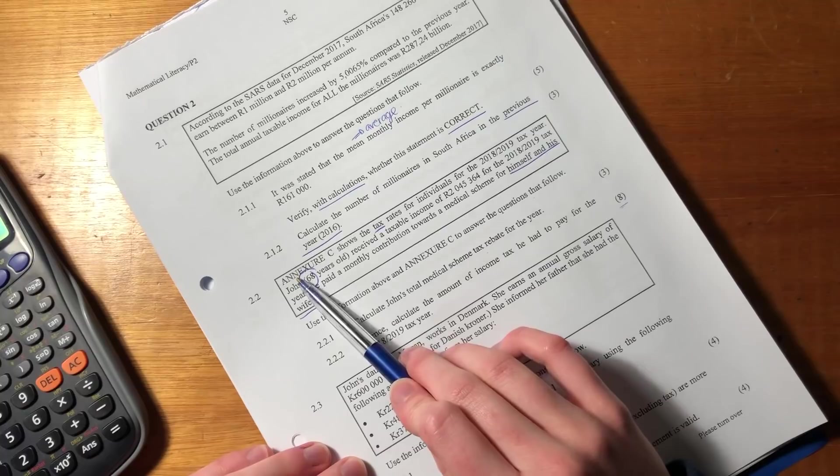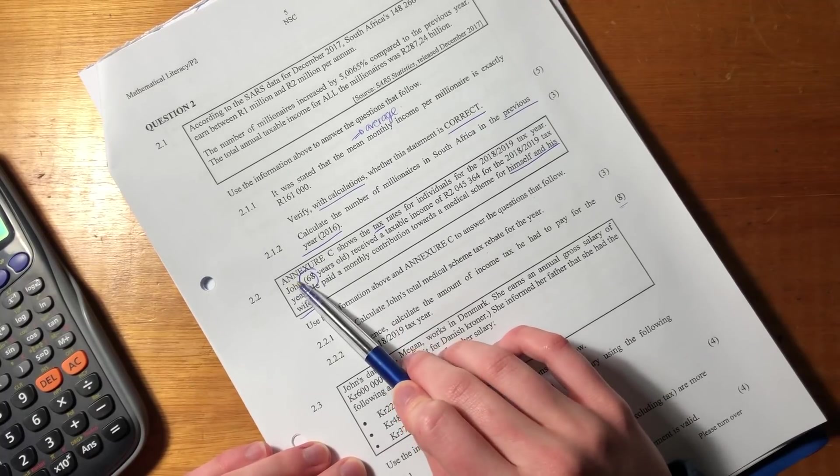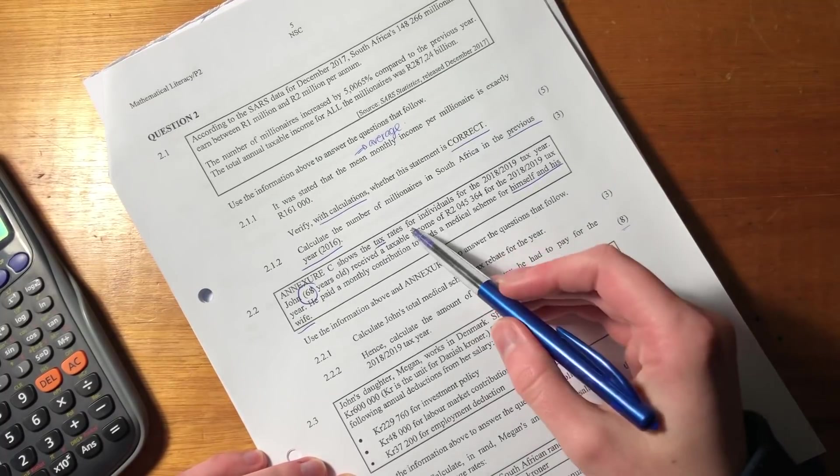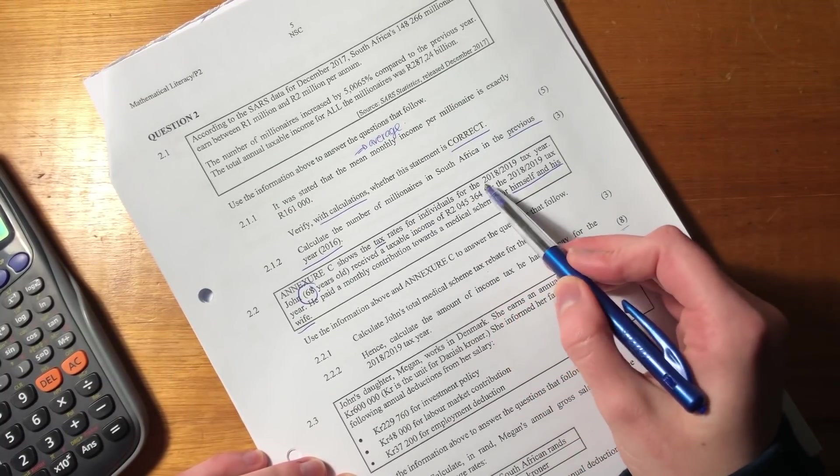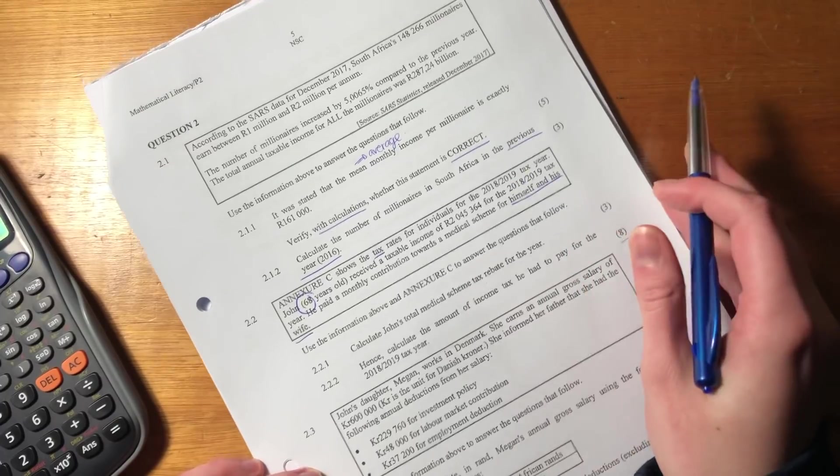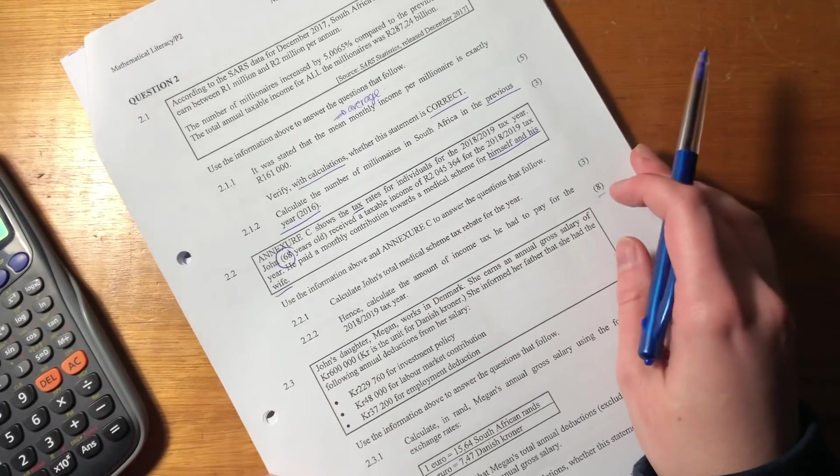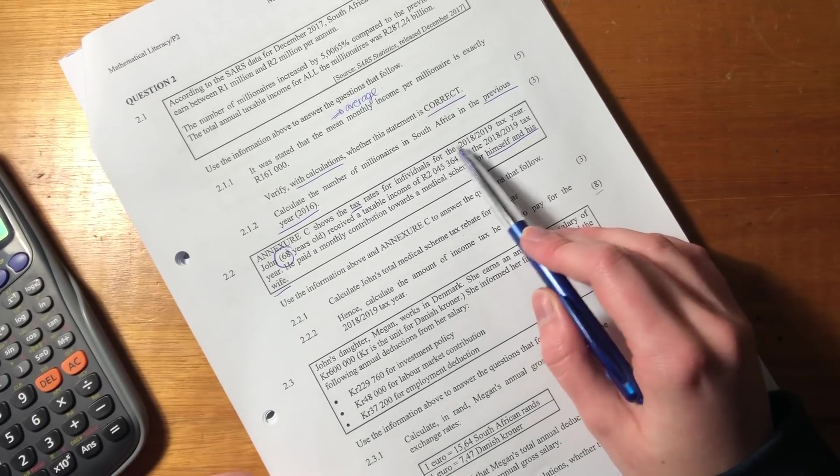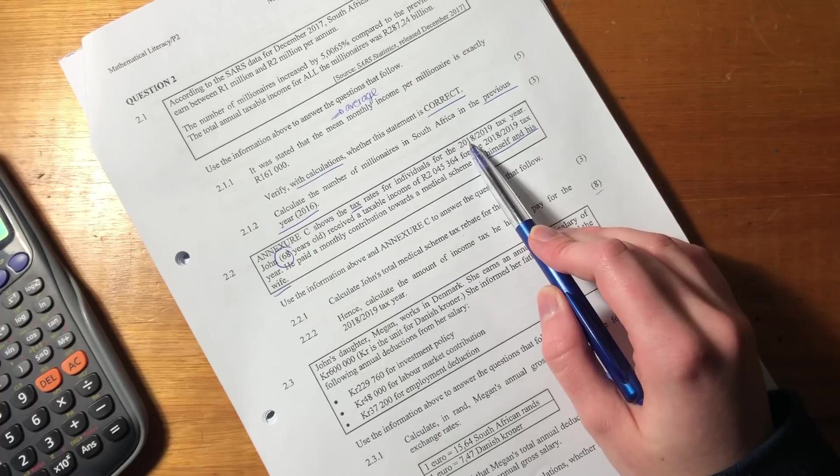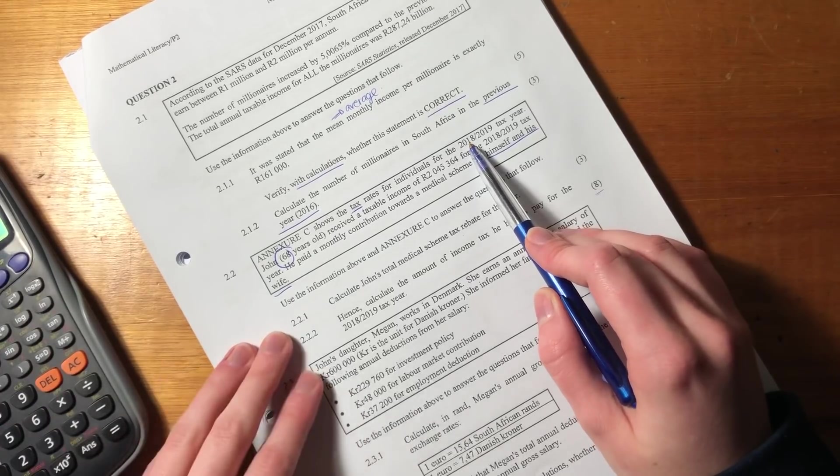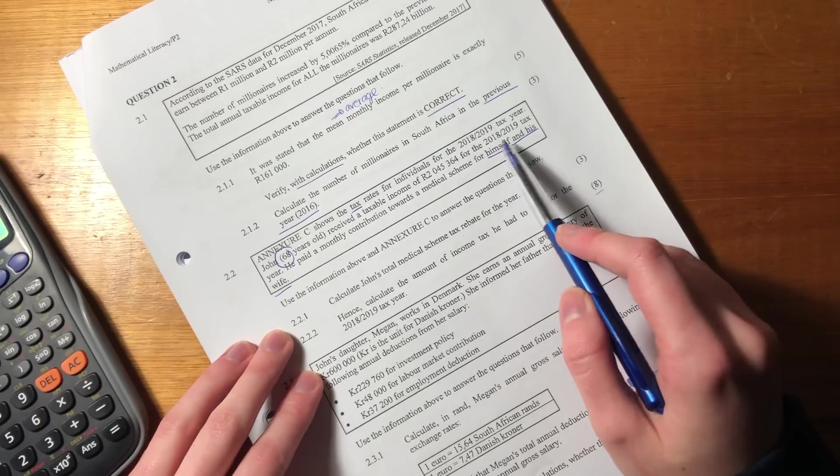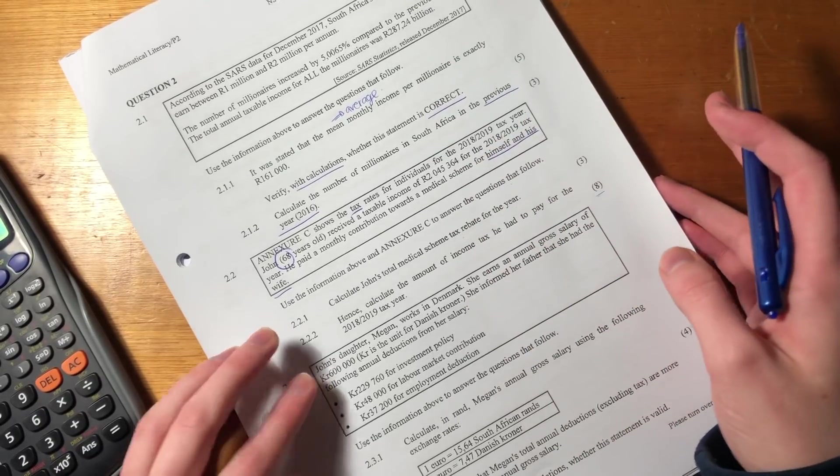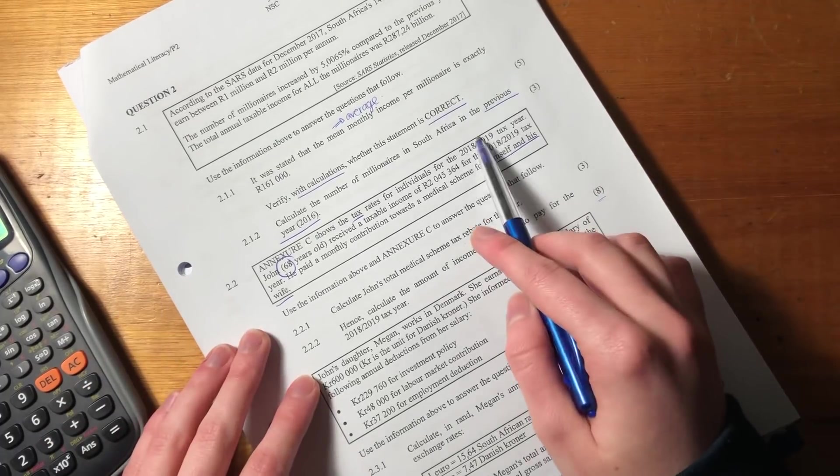Okay. So it says Annex C, I struggle with this word, shows the tax rates, seems like I struggle with a lot of words, for individuals for the 2018-2019 tax year. Now, you might be thinking, why do these tax years always run across two years? So the reason they run across two years is because the tax year in South Africa runs from 1 March to the end of Feb the following year. The end of Feb is either the 28th or 29th of February, depending on whether there's a leap year or not. That's why it's always two.